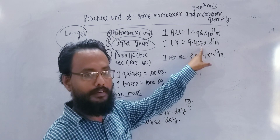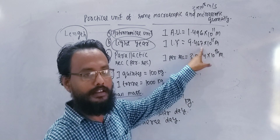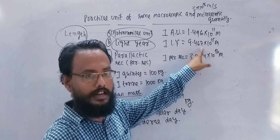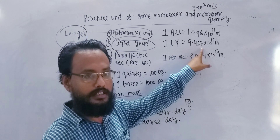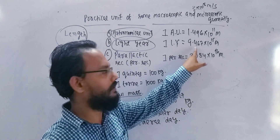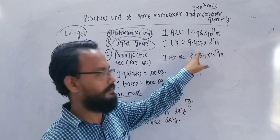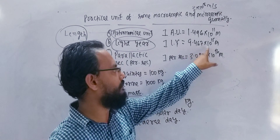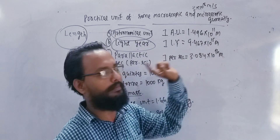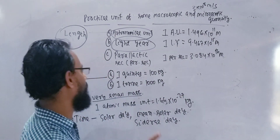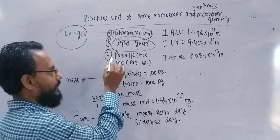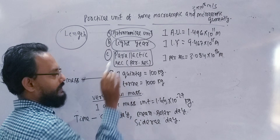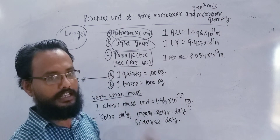The light traveling by year — we have to take the distance. Light is about the same meter again. Parallactic second — or parsec.